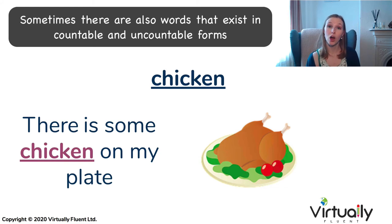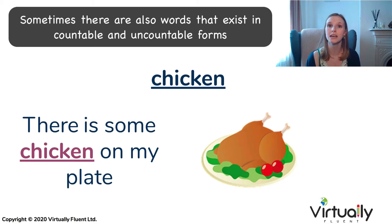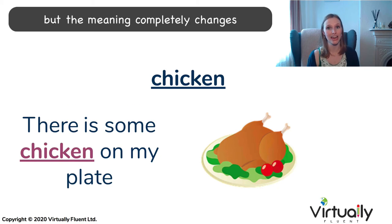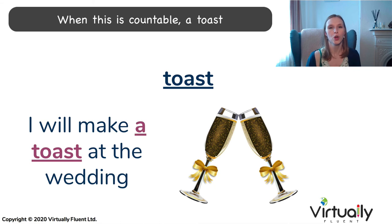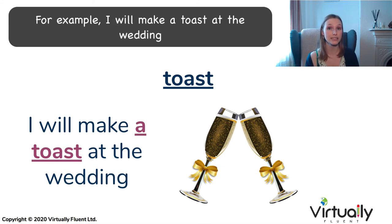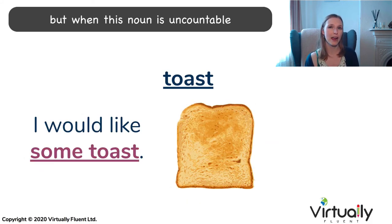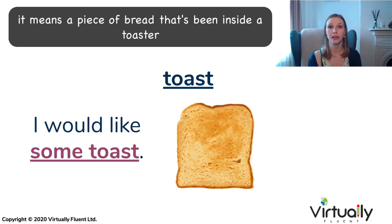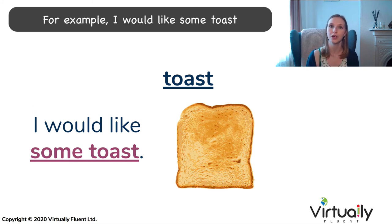Sometimes there are also words that exist in countable and uncountable forms, but the meaning completely changes. For example, 'toast.' When this is countable — 'a toast' — this means a speech and to say cheers with a glass. For example, I will make a toast at the wedding. But when this noun is uncountable, it means a piece of bread that's been inside a toaster. For example, I would like some toast.